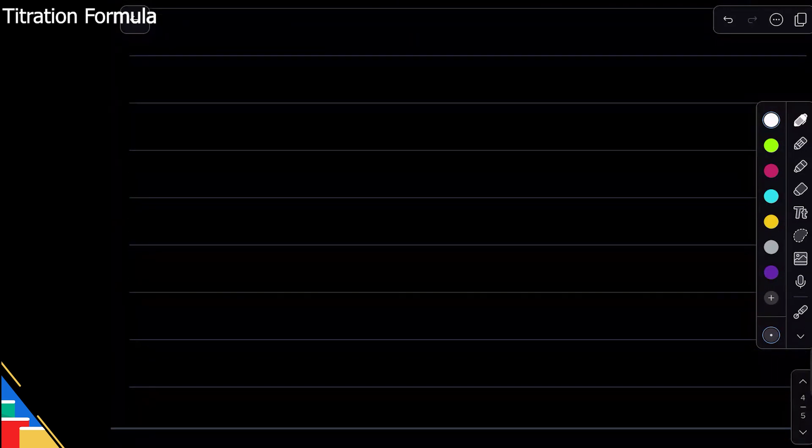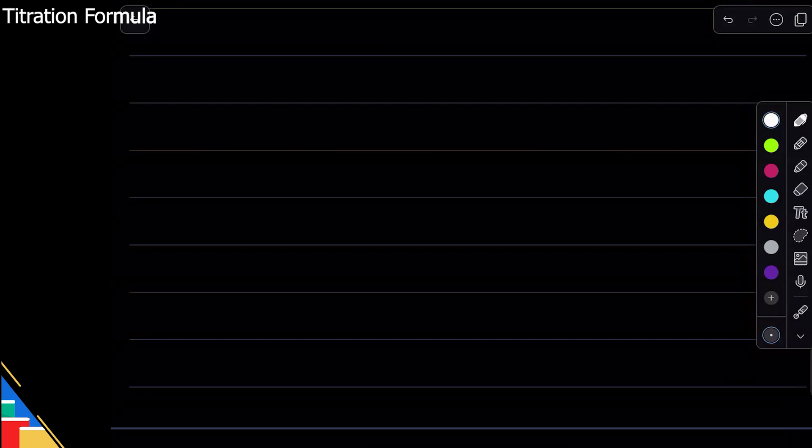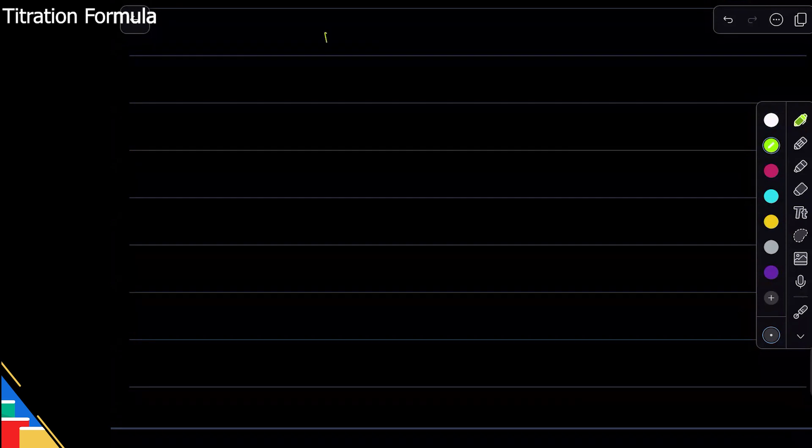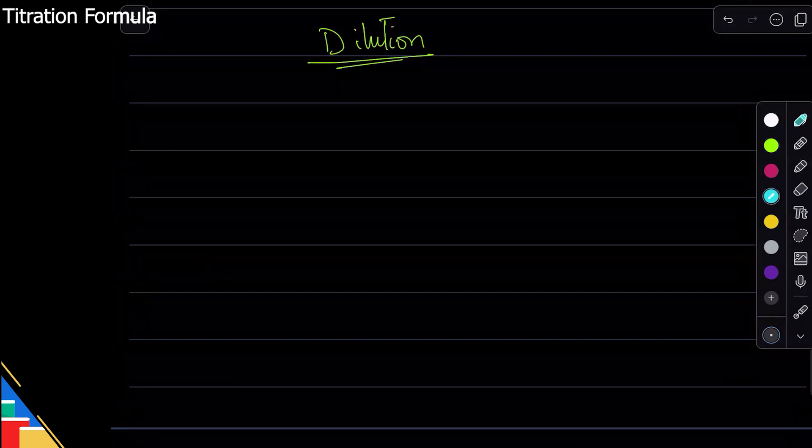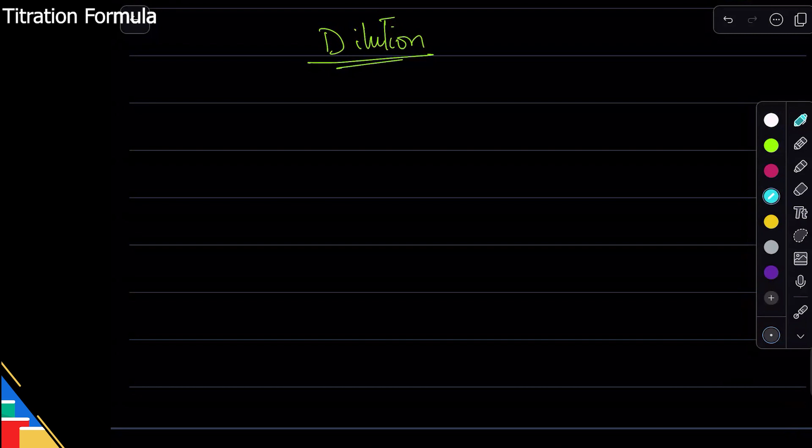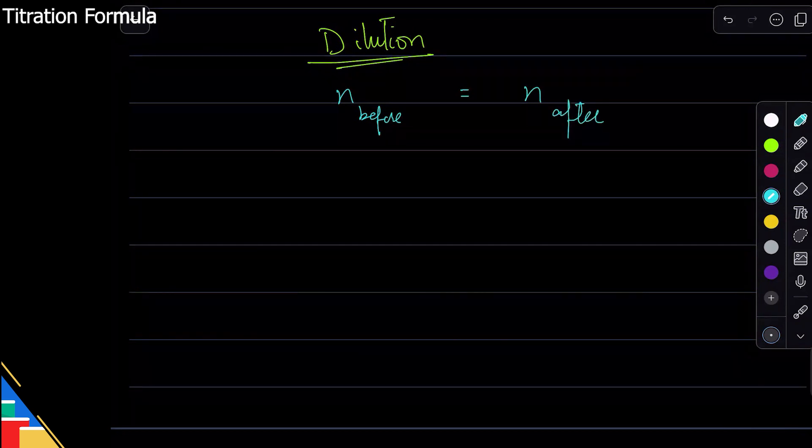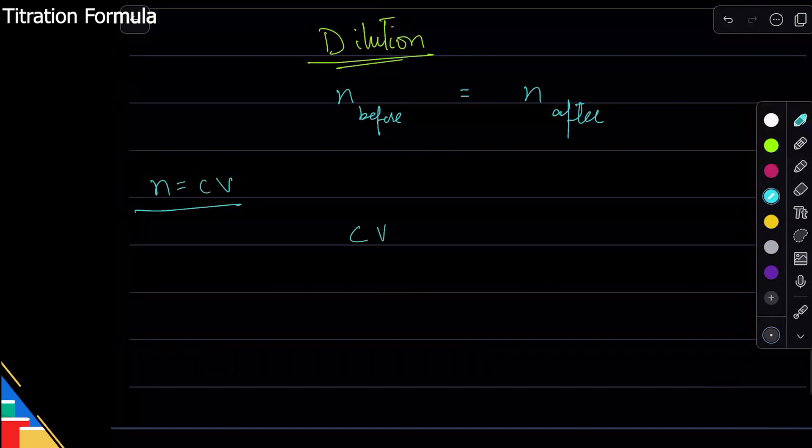Last thing in moles is dilution. This is something which is very rare - they don't usually ask you about it. I remember just one or two questions in the whole 10 years that I've been looking at these papers. In dilution, what they do is they add water to something, which means that number of moles before adding water is equal to number of moles after adding water.